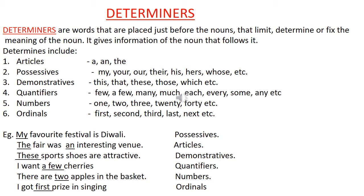Let's see examples of each. 'My favorite festival is Diwali' — My: possessive. 'The fair was an interesting venue' — The: article. 'These sports shoes are attractive' — These: demonstrator. 'I want a few cherries' — a few: quantifier. 'There are two apples in the basket' — two: number. 'I got first prize in singing' — first: ordinal.